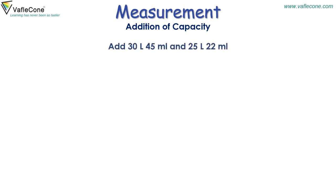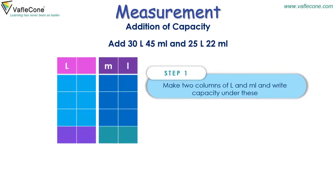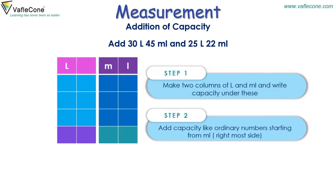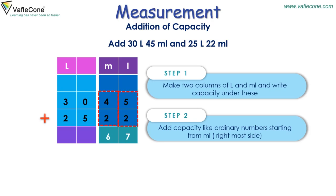Add 30 liters 45 milliliters and 25 liters 22 milliliters. Step 1: Make two columns of liter and milliliter and write the capacity under these. Step 2: Add capacity like ordinary numbers starting from milliliters. Place values in their columns and start adding. 5 plus 2 is equal to 7, then 4 plus 2 is equal to 6, then 0 plus 5 is equal to 5, and 3 plus 2 is equal to 5. So the answer is 55 liters 67 milliliters.